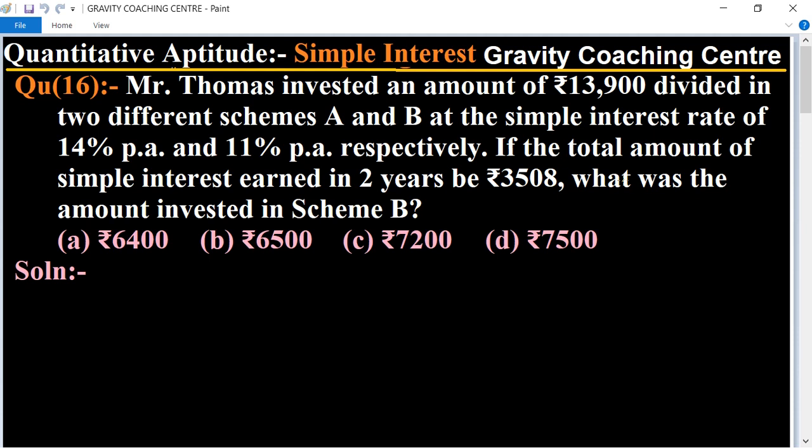So this question is Mr. Thomas invested in schemes A and B, ₹13,900 total, and both schemes have different rates of interest, 14% and 11%, and this is for 2 years. So the return in 2 years is ₹3,508. We need to find how much was invested in scheme B.